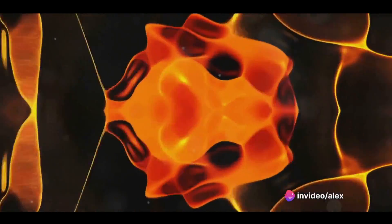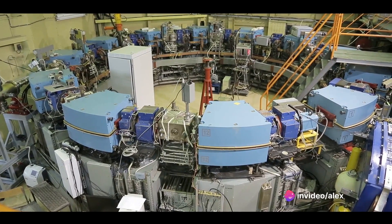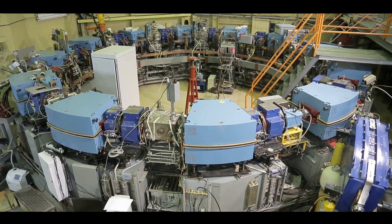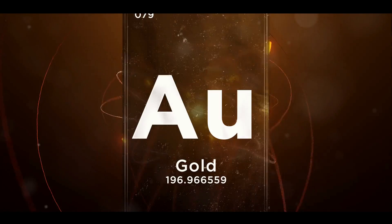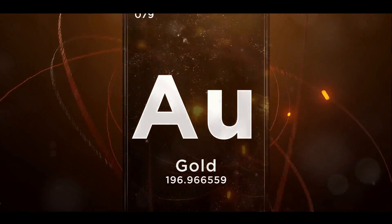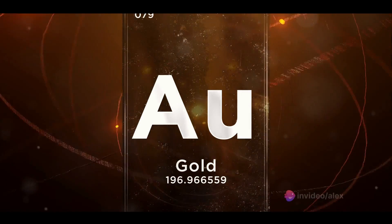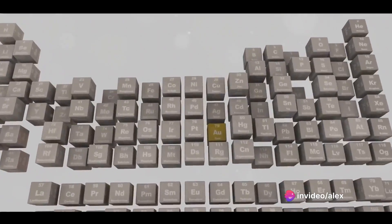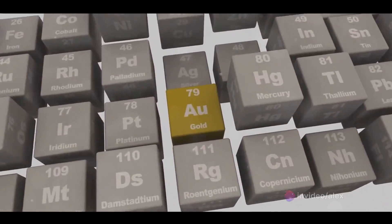These machines are not only incredibly expensive to build and operate, but the process of accelerating particles to such high speeds uses enormous amounts of energy. Secondly, even if we managed to remove a proton from a mercury atom, the resulting gold atom would be unstable and radioactive, making it not only useless for practical purposes, but also potentially dangerous.